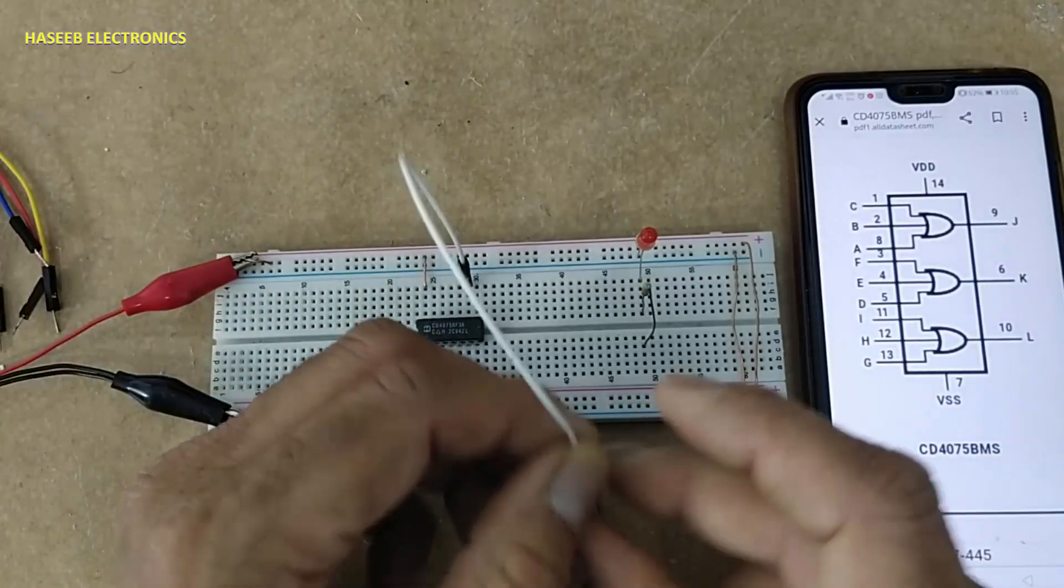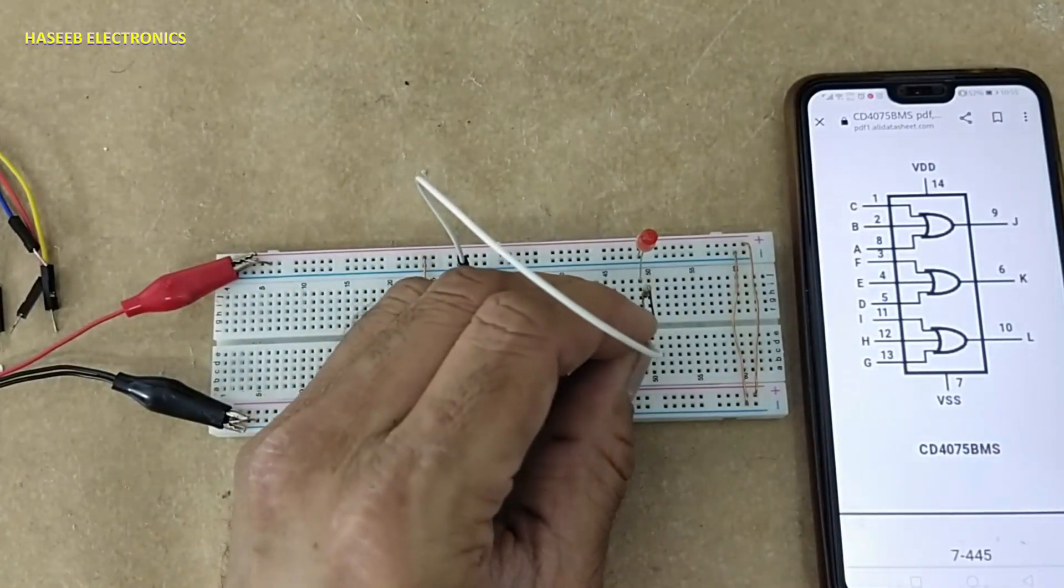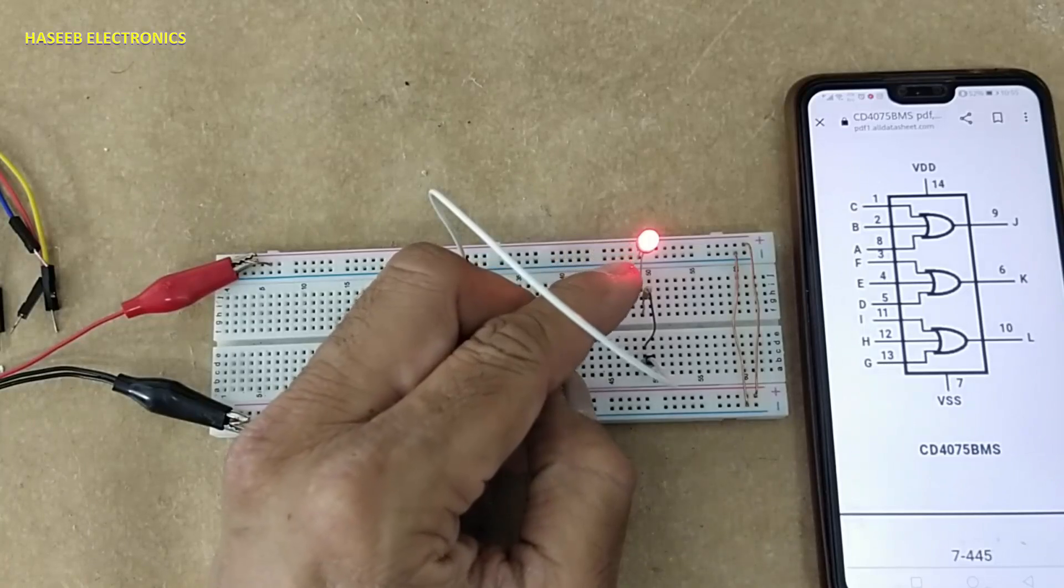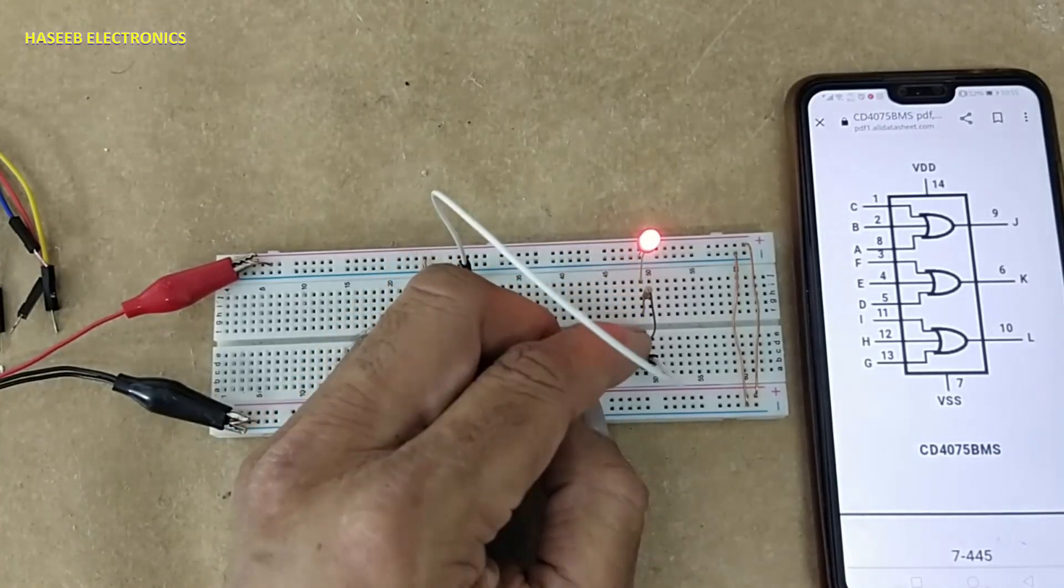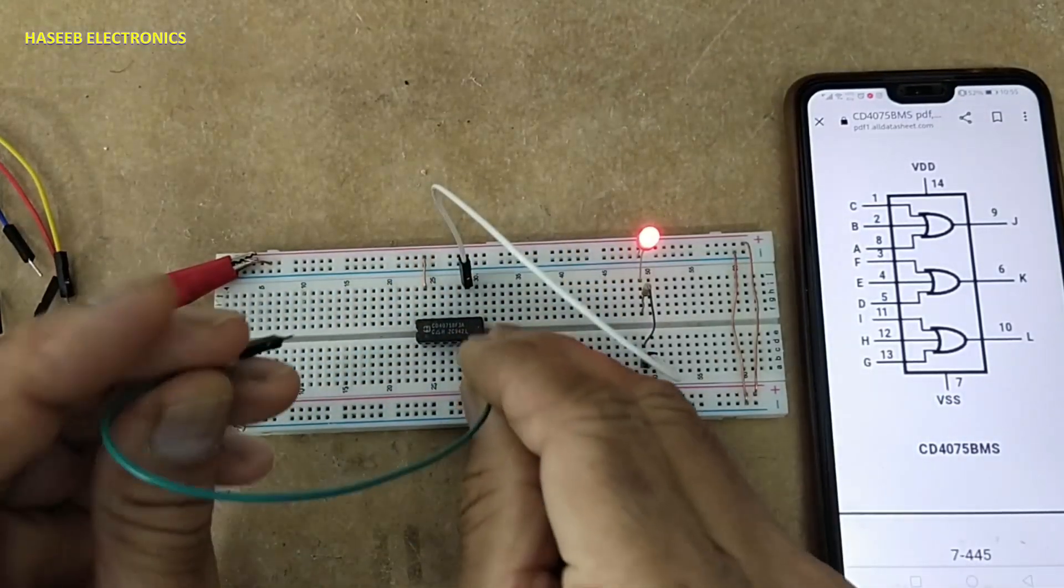This is pin 9. I connected an LED with a 330 ohm resistor at the anode of the LED. The cathode is grounded to pin number 8.